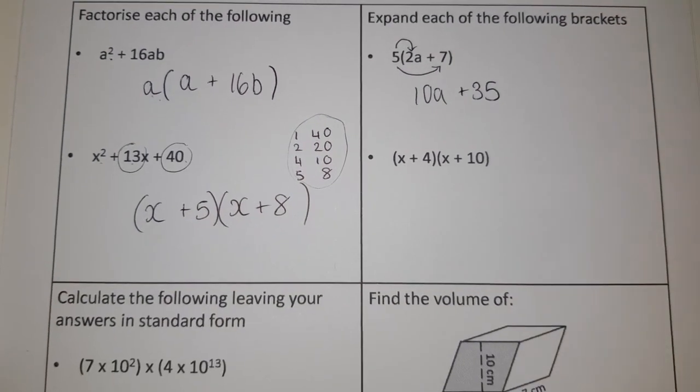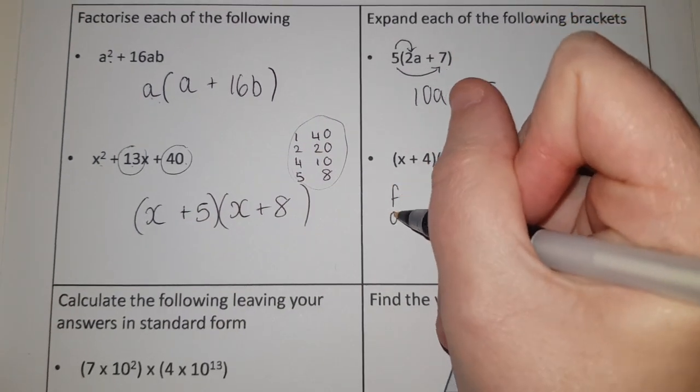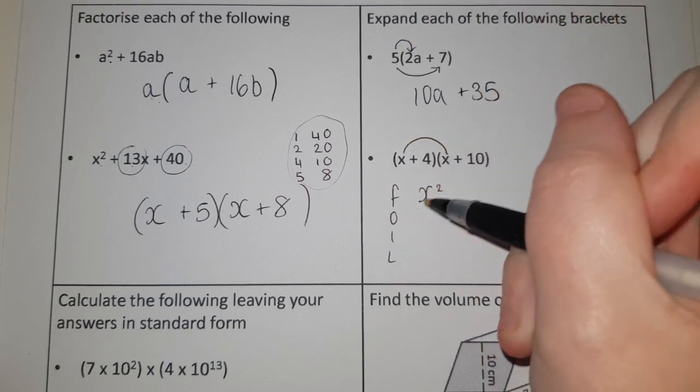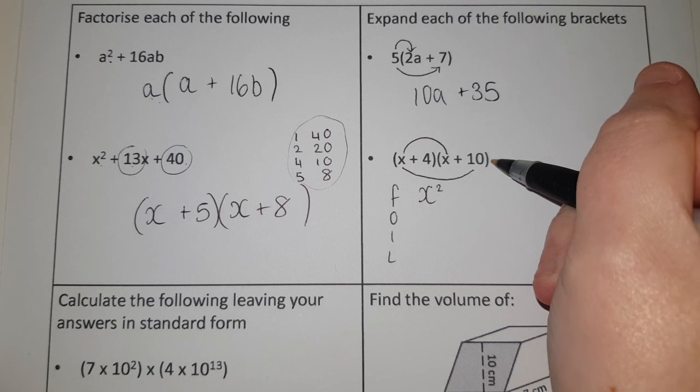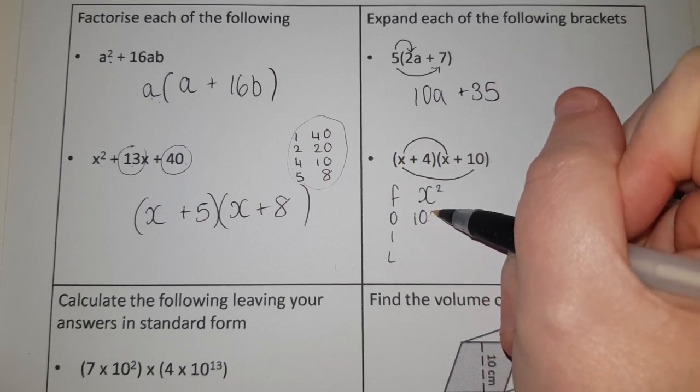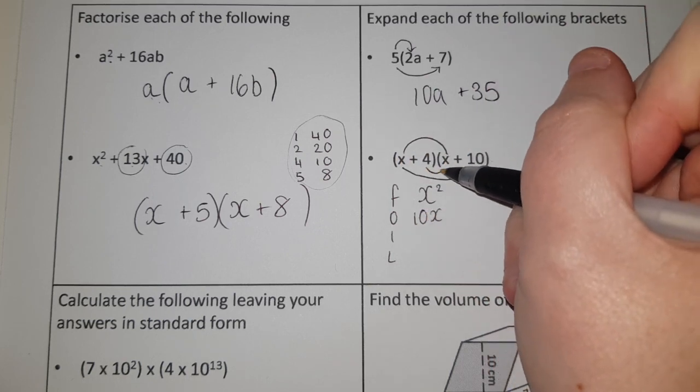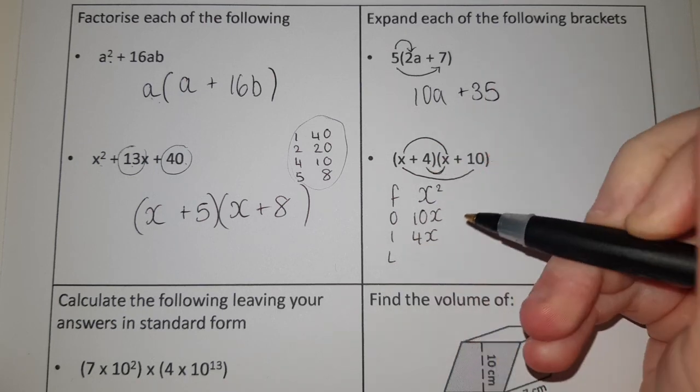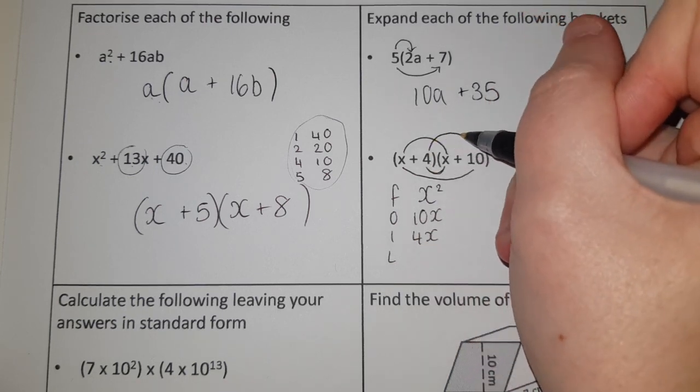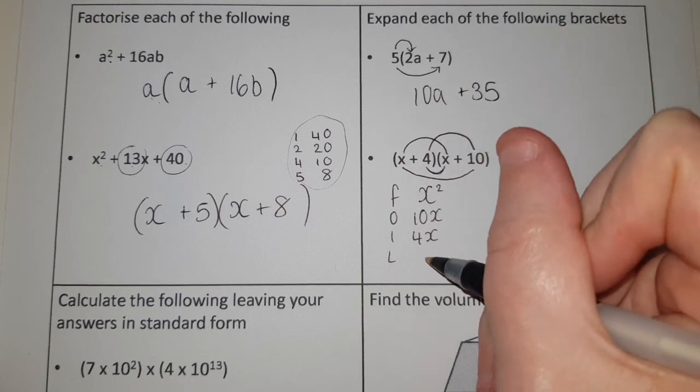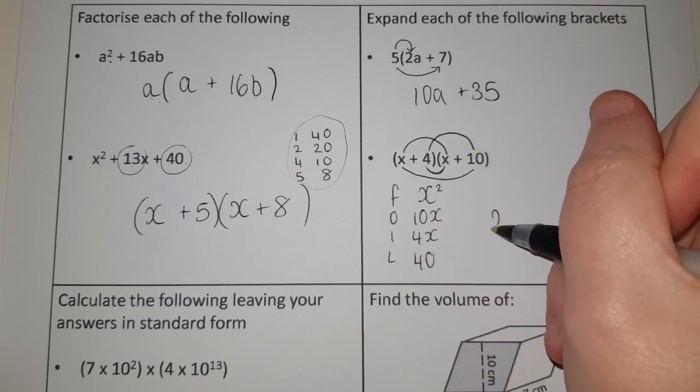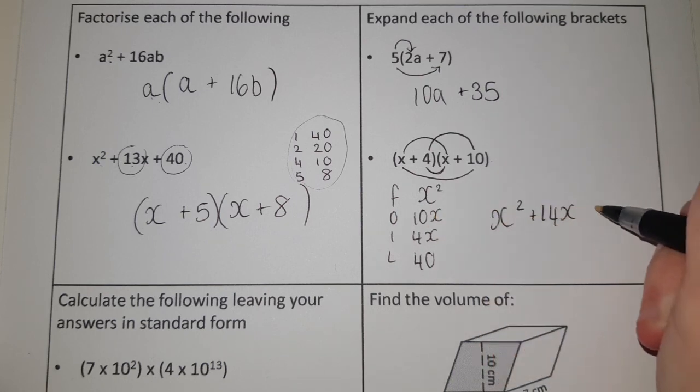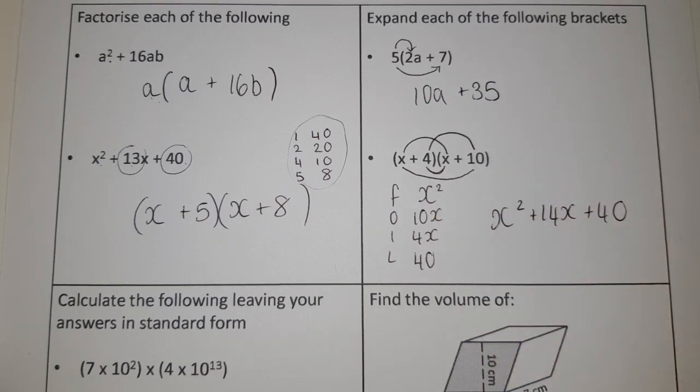Expanding a double bracket, you're either going to use FOIL or a grid. So if I use FOIL, that's the first term in each bracket, that gives me X squared. O stands for the 2 on the outside, so that's 10 and the X, that gives me 10X. I stands for inside, so that's the 2 in the middle, so 4 times X is 4X. And L stands for the last term in each bracket, so the last one is 4, the last one is 10, 4 times 10 is 40. So I'd have X squared, 10X add 4X is going to give me 14X, and then I've got plus 40 at the end.